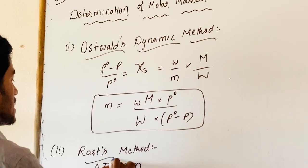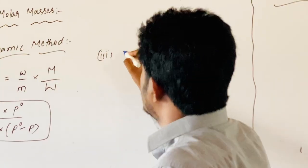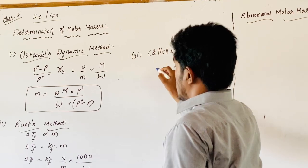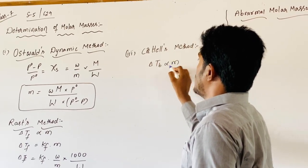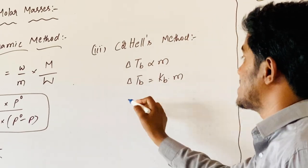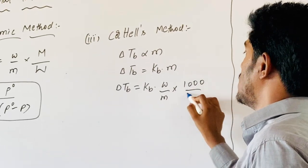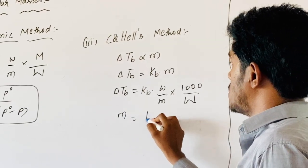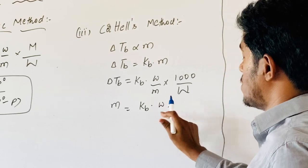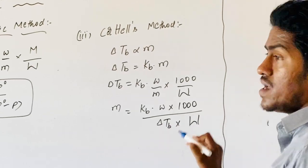Now coming to the third method, that is the Cottrell Method. Elevation of boiling point is directly proportional to molality. Delta Tb equals Kb into m. From here, molality is given as weight of solute by molecular weight of solute, into 1000 by weight of solvent in grams. Therefore, molecular weight equals the ebullioscopic constant Kb times W times 1000, divided by delta Tb times capital W, weight of solvent in grams.